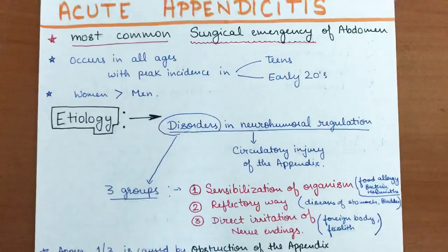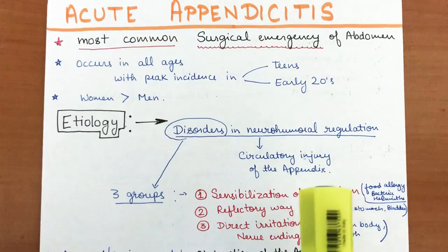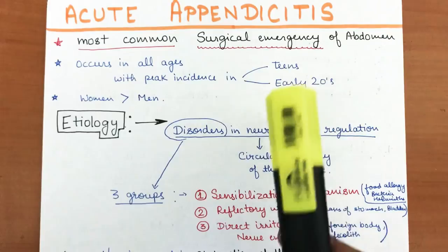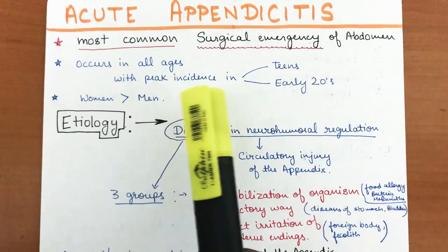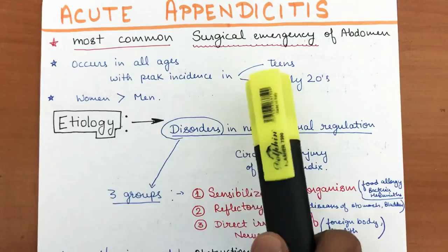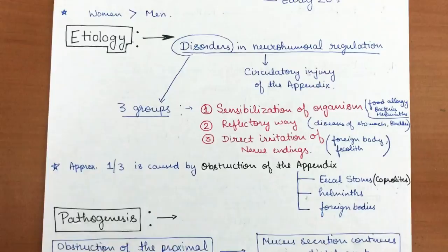Acute appendicitis is the most common surgical emergency of the abdomen — it is what emergency doctors see most frequently. From every second person, once in a lifetime they will have acute appendicitis. It occurs in all ages, with peak incidence in teens and early 20s. It occurs more in women compared to men.